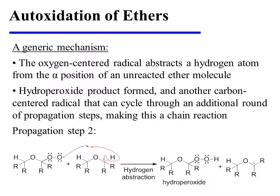In propagation step 2, the oxygen-centered radical abstracts a hydrogen atom from the alpha position of an unreacted molecule of ether. This results in the formation of the hydroperoxide product and a new carbon-centered radical that can cycle through another round of propagation steps. Therefore, this is a chain reaction.